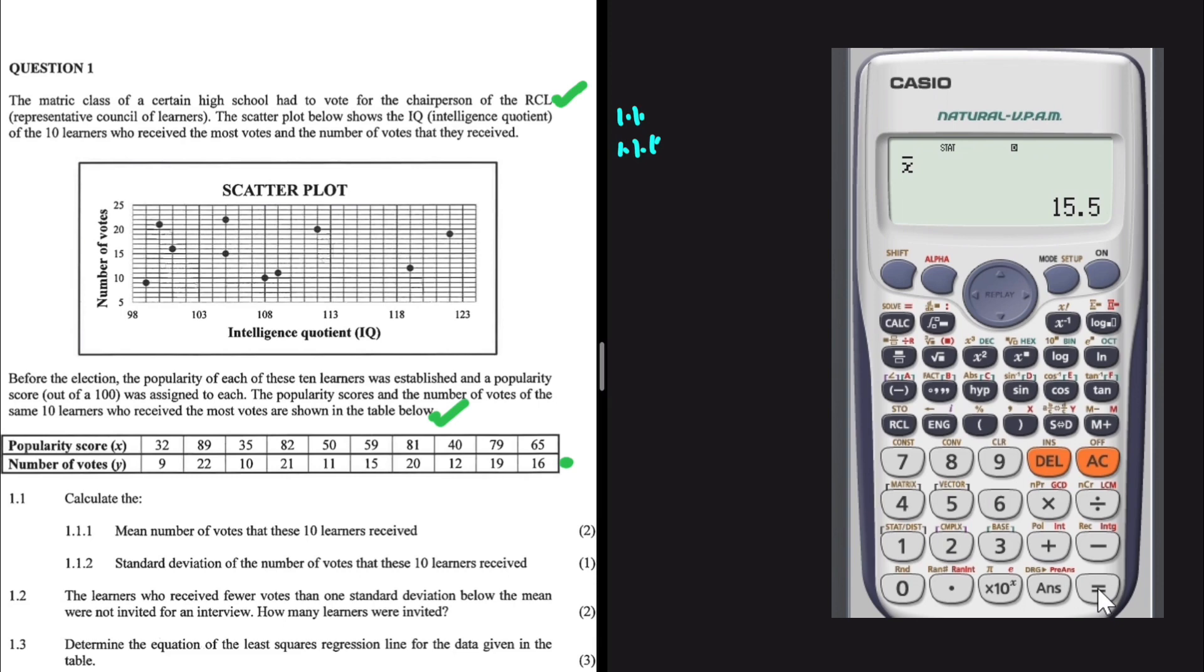The mean, the Y bar in this case, because the number of the votes are Y, Y bar is equals to 15.5. You might be asking yourself, but we are only writing the answer. What about the formula or the substitution? Am I not going to lose those marks? No. Even if you write only the answer, you get full marks. So you don't have to worry about that.